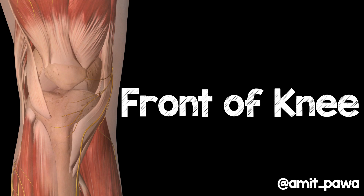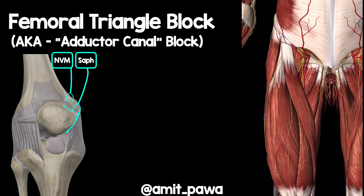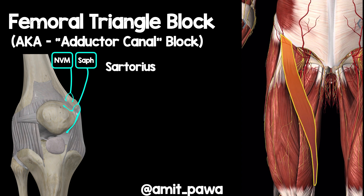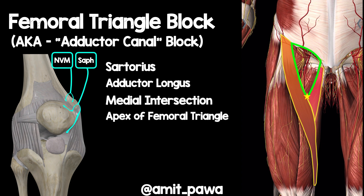Let's look at the front of the knee in more detail. The femoral triangle and adductor canal block: traditionally this block was called the adductor canal block, aiming to take out the saphenous nerve. We've subsequently appreciated how important the nerve to vastus medialis is, and to get that we need to perform the block at the apex of the femoral triangle, just as the adductor canal starts. We look for the medial intersection between sartorius and adductor longus, and the femoral triangle is highlighted there. Adding in vastus medialis helps us understand the muscles and boundaries important for this block.